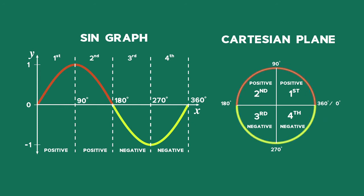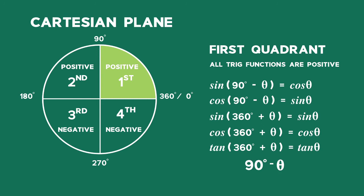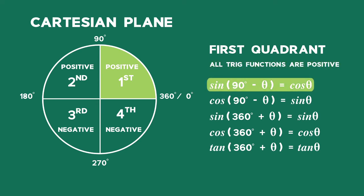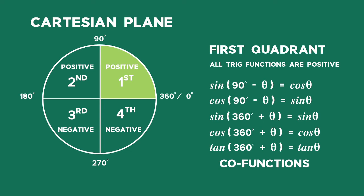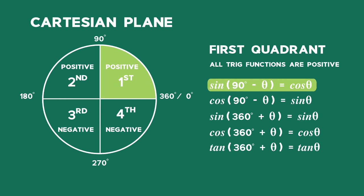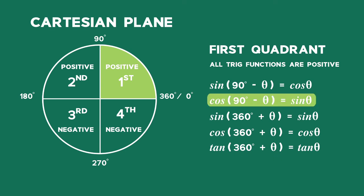This helps us deduce the sine ratio in the different quadrants. In the first quadrant, all angles are less than 90 degrees, and any acute angle gives 90 minus theta. In the first quadrant all trig functions are positive, so sine of 90 minus theta gives a positive answer. What happens in the first quadrant with sine, cos, and tan is we get co-functions: sine of 90 minus theta gives the same ratio as cos of theta, and cos of 90 minus theta gives the same value as sine of theta. These are called co-ratios.